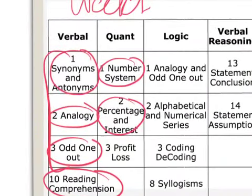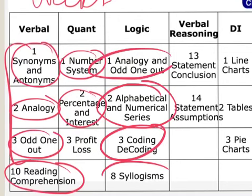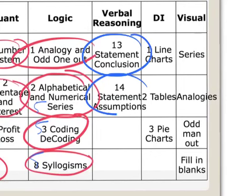Logic point of view - analogies, number alphabetical and numerical series, coding decoding, syllogism. Syllogism is going to come for five marks for sure, coding decoding five marks, series five marks. So fifteen mark topics we're covering here. Verbal reasoning - statement conclusion and statement assumption, these two topics. These are the chapter numbers from the book - chapter 13, chapter 14, chapter 1, chapter 5, 2, 3, 8.